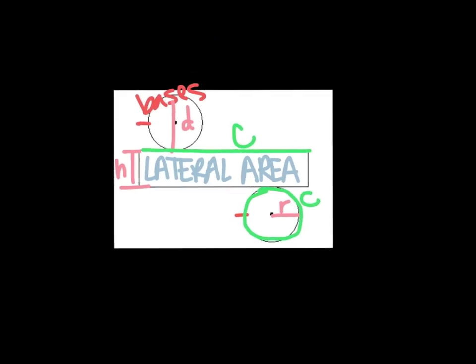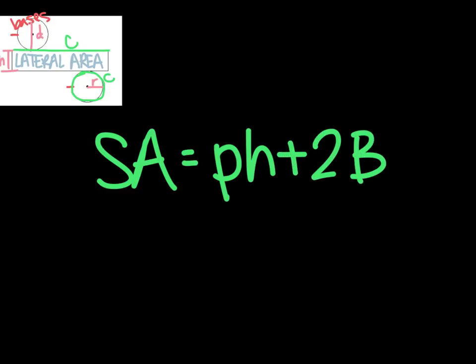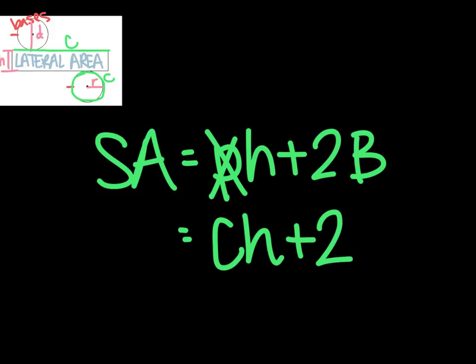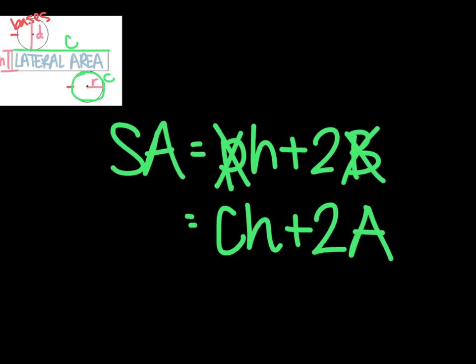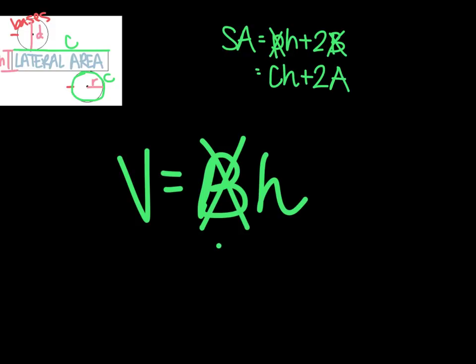Now that we understand where it comes from, we're going to tweak those formulas a little bit. The surface area formula is SA equals pH plus 2B. We're going to change that — P stands for perimeter, but the perimeter of a cylinder is called circumference, so we're going to use CH plus 2. And the bases are circles, so we change B to A. For volume, the formula is V equals BH, but we know the base is the area of a circle, so we use AH.